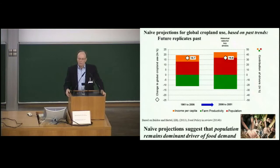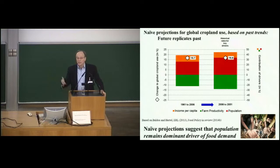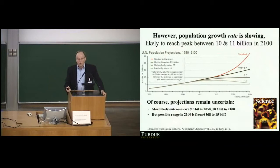As we look to the future, I'll build up a future scenario sequentially. First, what if the future were like the past — same model, same drivers, same cumulative rate of change? A trivial question, but a nice starting point: cropland change would be about the same. But we know more about the future. Starting with population, the most important historical driver, we know that population growth rates are slowing.